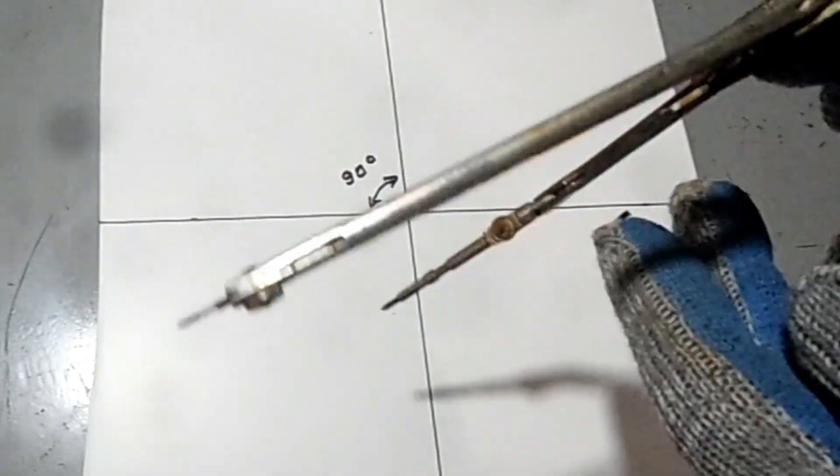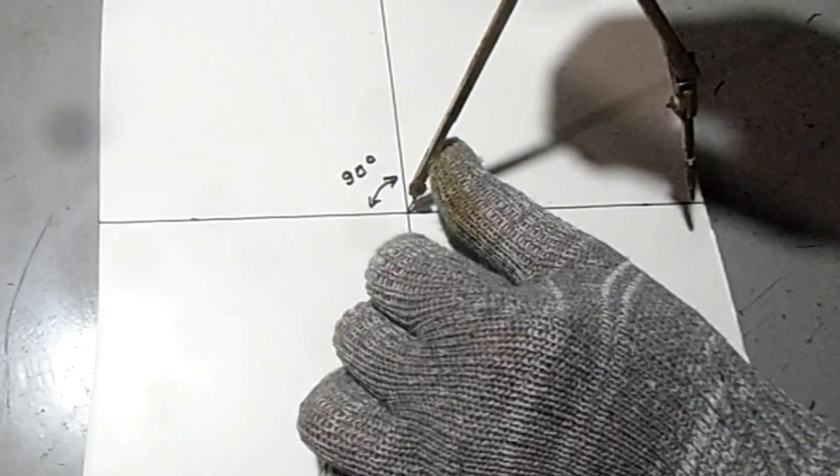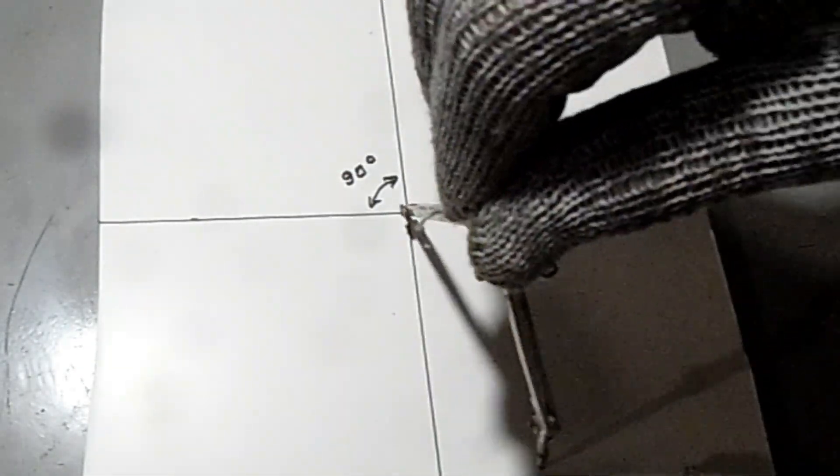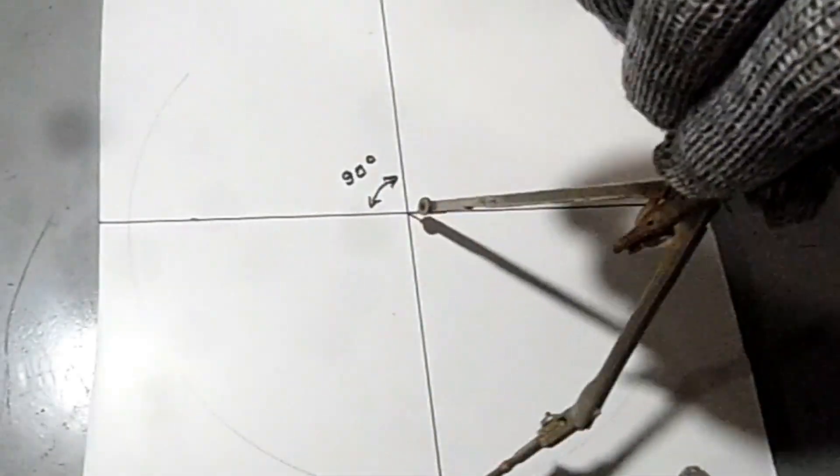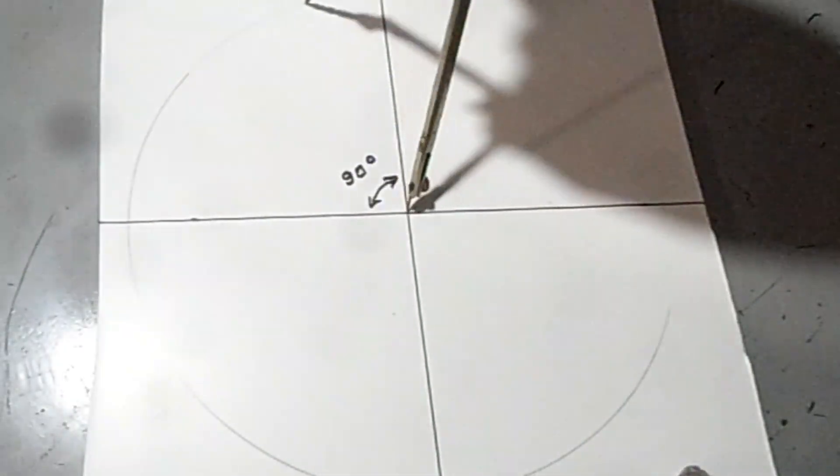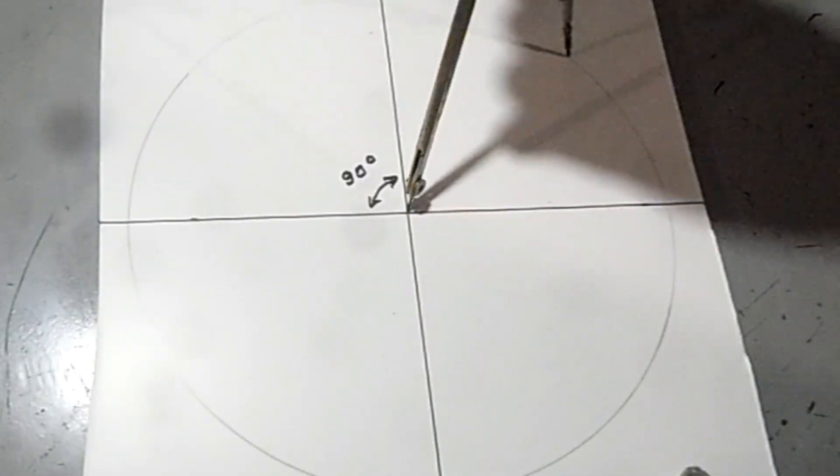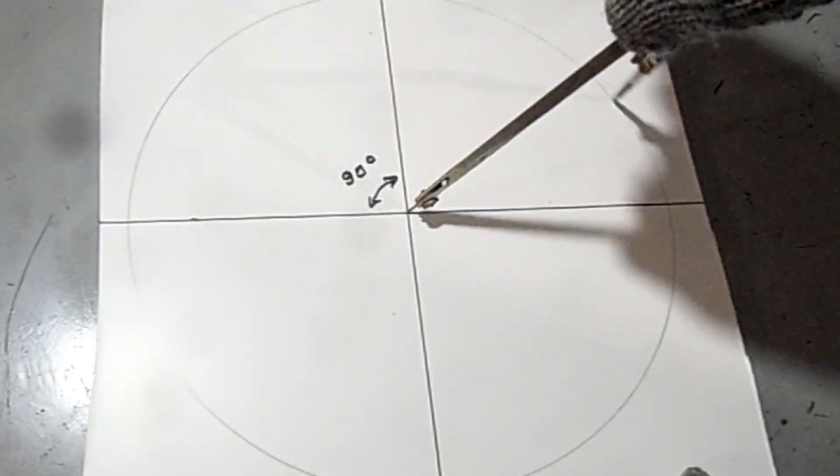To divide a circle into 5 parts, I'll use a method I know using a compass. I won't comment here, just watch how it's done. If anyone doesn't know or didn't understand the first time, you can pause it, write it down for yourself, or watch it again.